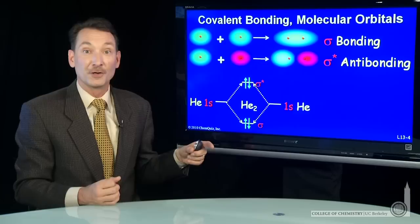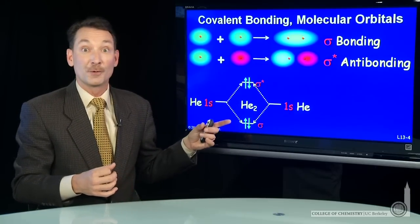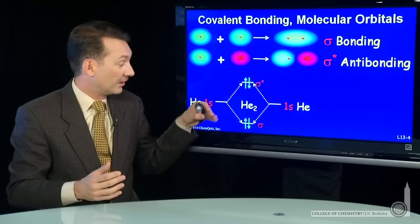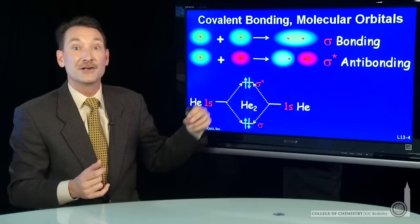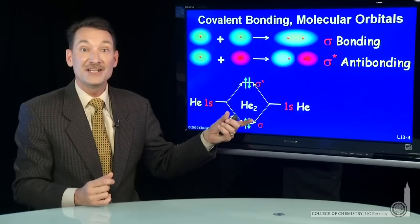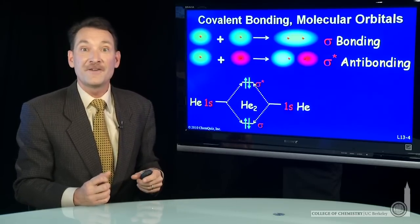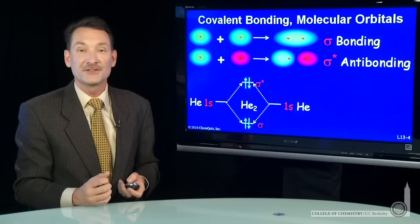Now the bonding orbital is favorable for bonding. The antibonding orbital is unfavorable for bonding. A lower energy interaction and a higher energy interaction, so those two cancel each other out. Helium, He2 the molecule, doesn't form because it's not favored by the molecular orbital system.